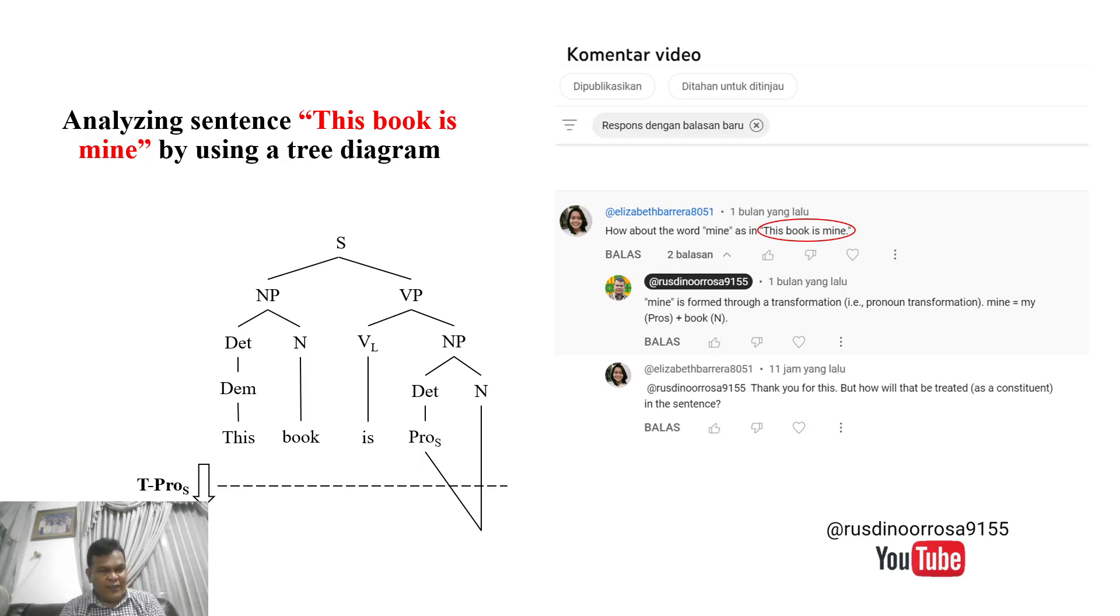The result of possessive pronoun plus noun here is 'mine.' That is the position of 'mine' in a tree diagram. The analysis has been completed. You have here the analysis of the sentence 'This book is mine' by using a tree diagram.